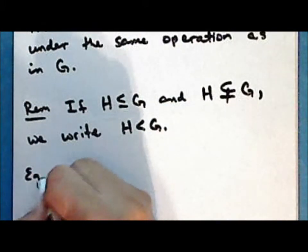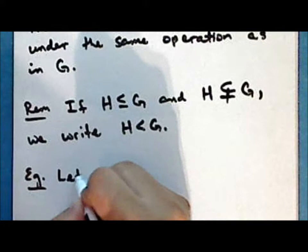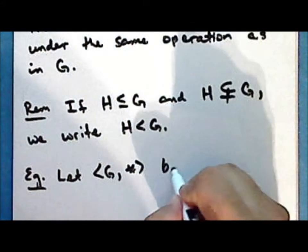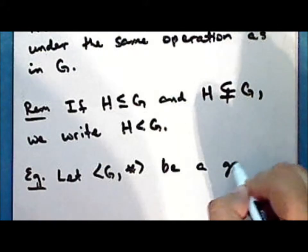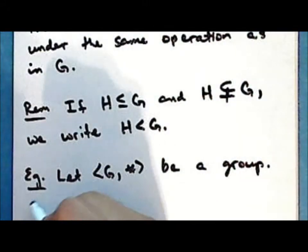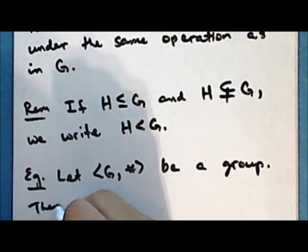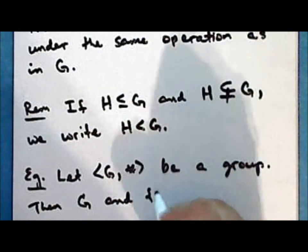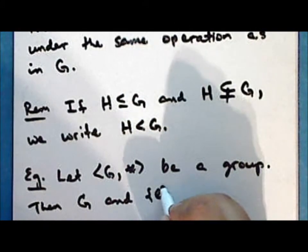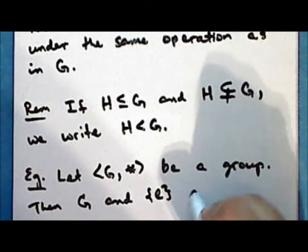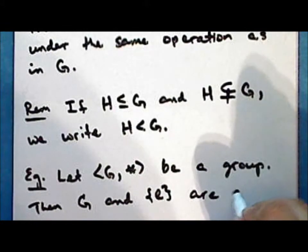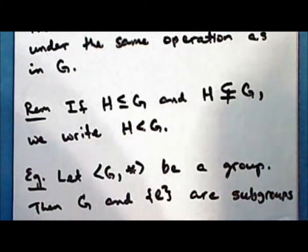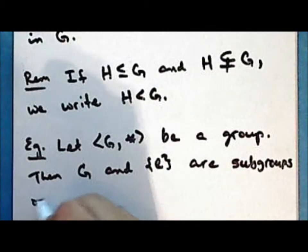Let's look at some examples. Let the set G together with binary operation star be a group. Then the underlying set G, and the set containing the identity element only, are both subgroups of the group G.